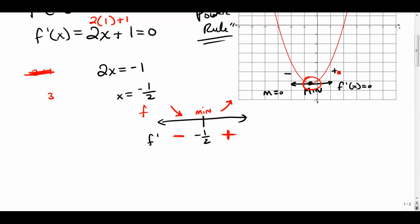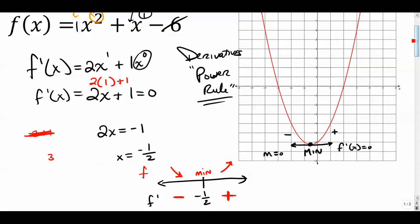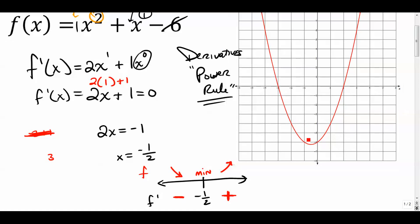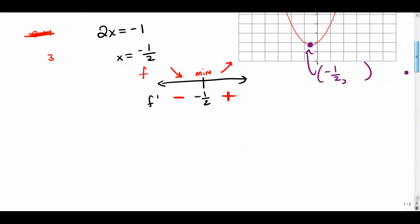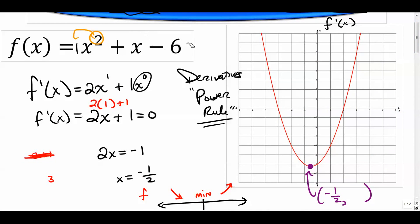That minimum value is right there — a critical point. Its x coordinate is negative one-half, and to find the y value, plug negative one-half into the original function, which was x squared plus x minus six.